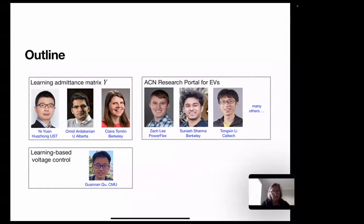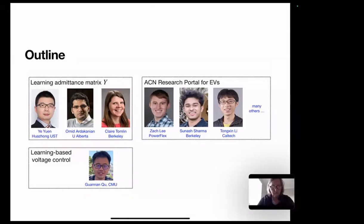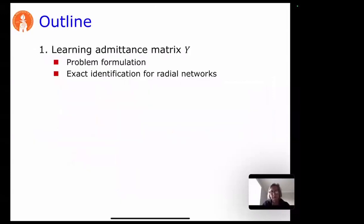I want to talk about maybe two or three pieces of work, depending on time — I should finish in about 55 minutes. First, learning the admittance matrix of a distribution network, meaning both the topologies and the impedances on the lines. Second, a practical project we've been working on at Caltech — the adaptive charging network for electric vehicles and the research facility built on top of that physical infrastructure. If time permits, I'll discuss learning-based voltage control work by a former postdoc.